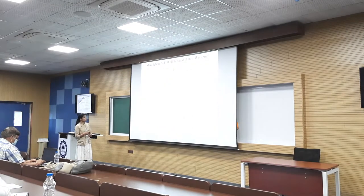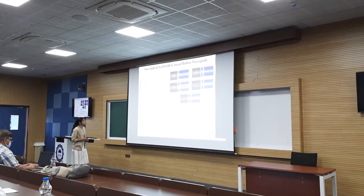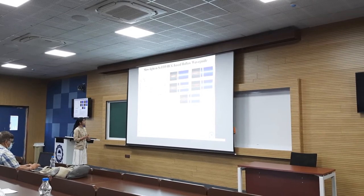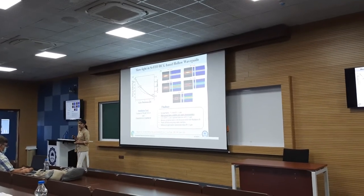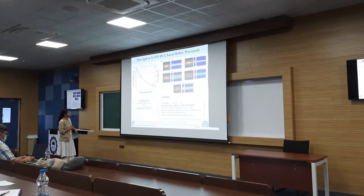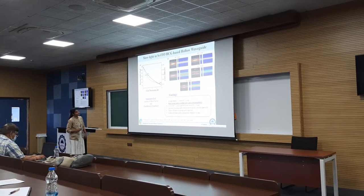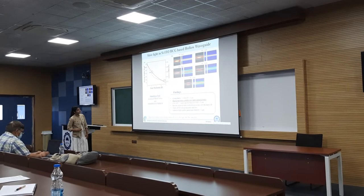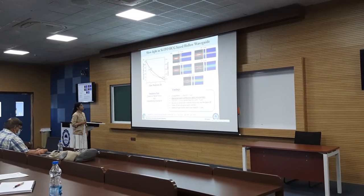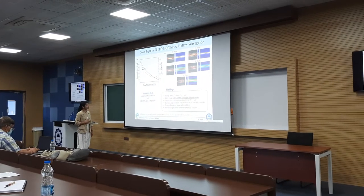Moving toward the slow light characteristics — from the graph, with decreasing core thickness the group index is increasing. Slow light is quantified by high group index and low group velocity, so with low air core thickness we obtain a high group index. The simulated mode profile in FDTD shows that at D equal to 1 micrometer, we have high group index as well as enhanced light-matter interaction. However, loss also increases, so there is a trade-off between loss and group index at various values of D.